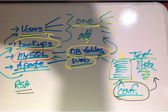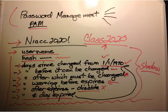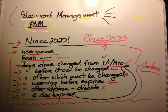We also talked about setting up security so you can copy information from your machine to another machine. For password management, you can do a little research on PAM — that's how passwords are managed in a Linux system. Windows has a SAM file to manage the same kind of thing.